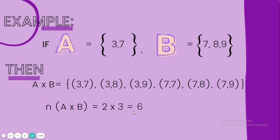And another example, we have 3 and 7 for set A, and 7, 8, 9 for set B. Let us practice the steps to get the Cartesian product of these sets. The first number in set A is 3, so we partner it with set B's first number, which is 7, giving us (3,7). Then with the second number in set B, which is 8, giving us (3,8). And continue, which is 9, so (3,9).